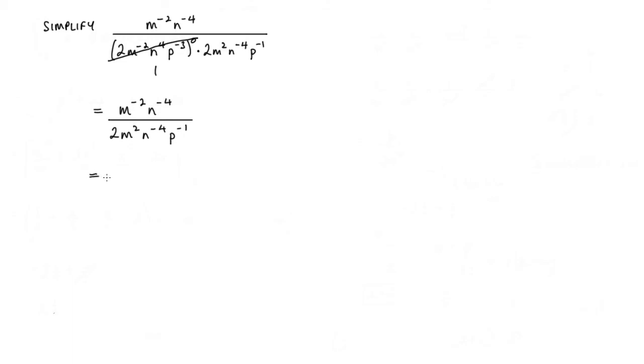Now for this next step I'm going to write this m to the minus 2 again using the laws of indices. So m to the minus 2 can be written as 1 over m squared. So we've got 1 over m squared. And that is multiplied by, using the same process, 1 over n to the power of 4.